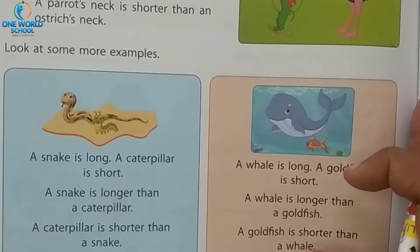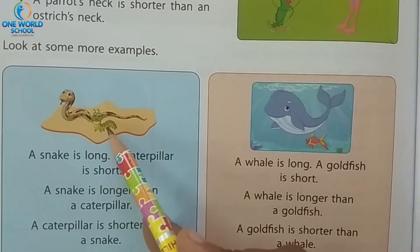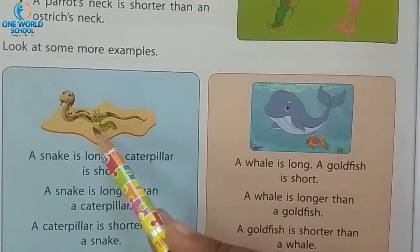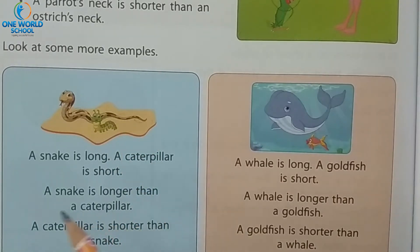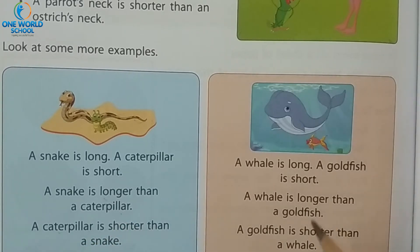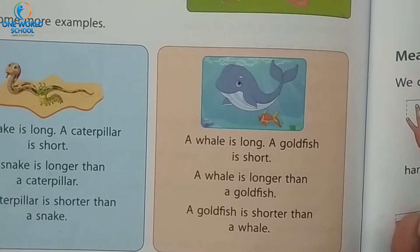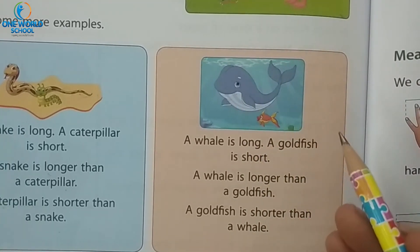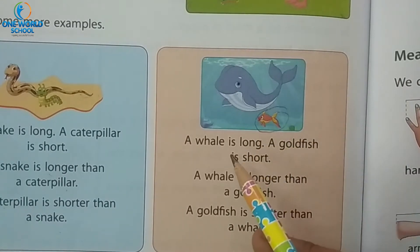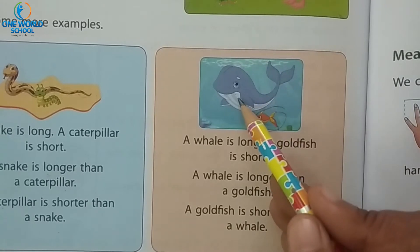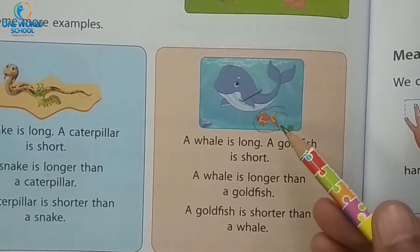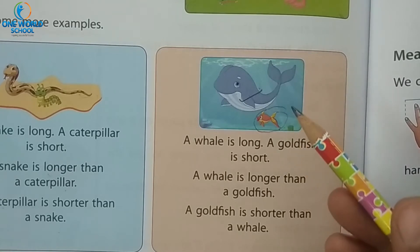See some more examples. Snake and caterpillar — a snake is long and caterpillar is short. So, a snake is longer than a caterpillar, and a caterpillar is shorter than a snake. Next picture: well and goldfish. A goldfish is short and a well is long. A well is longer than a goldfish, and a goldfish is shorter than a well.